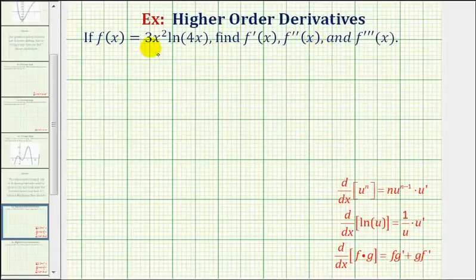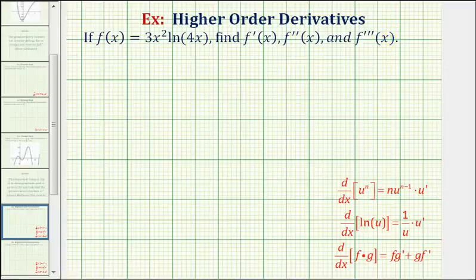If f of x equals three x squared natural log four x, we want to find the first, second, and third derivative functions. The first thing we should recognize is that the given function is a product of two functions, since we have three x squared times natural log four x.